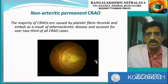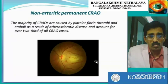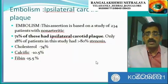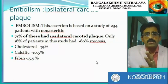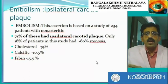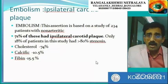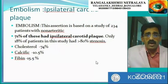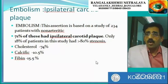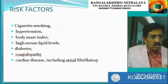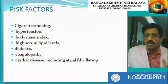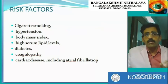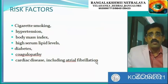Non-arthritic CRAO with cilioretinal artery sparing shows preserved vessels in one or more areas, leading to better perfusion and visual acuity, well-identified clinically and with FFA. Non-arthritic permanent CRAO may present with retinal whitening, disc edema, and blot hemorrhages. In non-arthritic cases with suspected embolism, almost 70% have ipsilateral carotid atherosclerotic plaque. Other plaque types include calcific or fibrin. Risk factors to rule out: cigarette smoking, hypertension, hyperlipidemia, diabetes, coagulopathy, and atrial fibrillation.